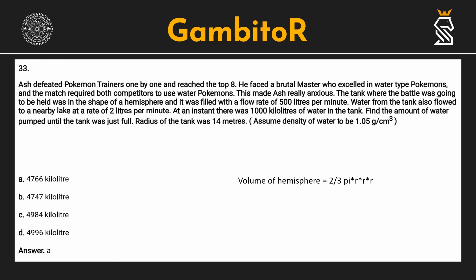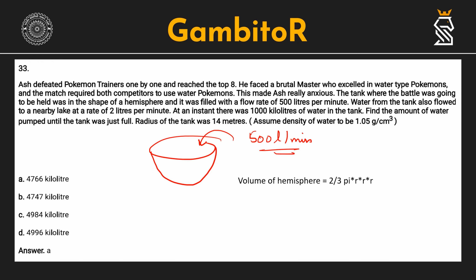Question number 33. Ash defeated Pokémon trainers one by one and reached the top. He faced a brutal massive exhale in water-type Pokémon, and the match required both competitors to use water Pokémon. The tank where the battle was going to be held was in the shape of a hemisphere, and it was being filled at a flow rate of 500 liters per minute. Water from the tank also flowed to a nearby lake at 2 liters per minute.